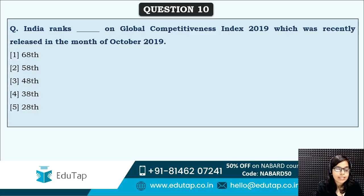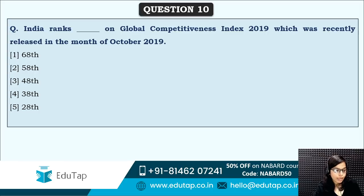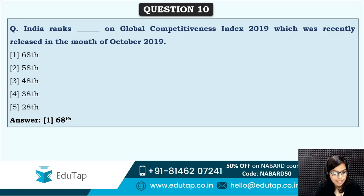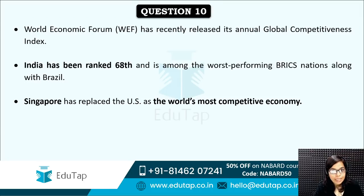Next: India ranks at which place on the Global Competitiveness Index 2019? You need to remember both India's rank and which organization released this index. The correct answer is 68th place. Most of you have answered correctly. The World Economic Forum released this particular index, and Singapore is the world's most competitive economy at first place.